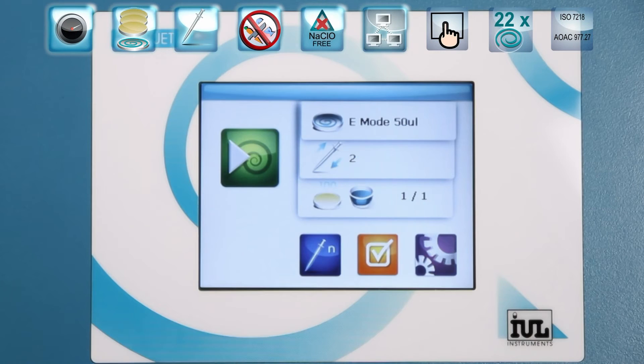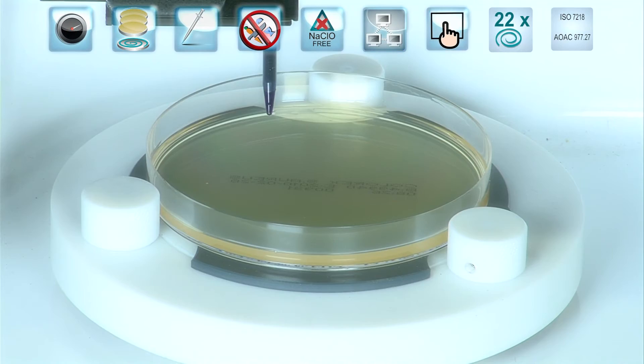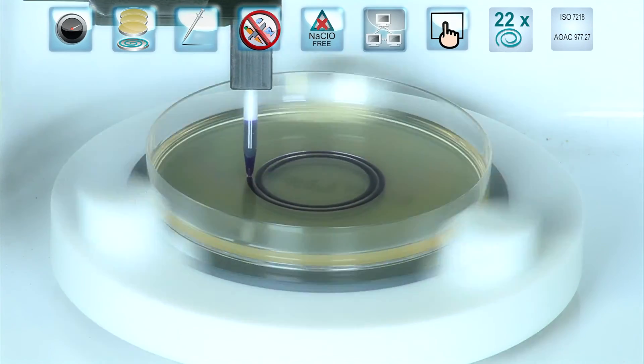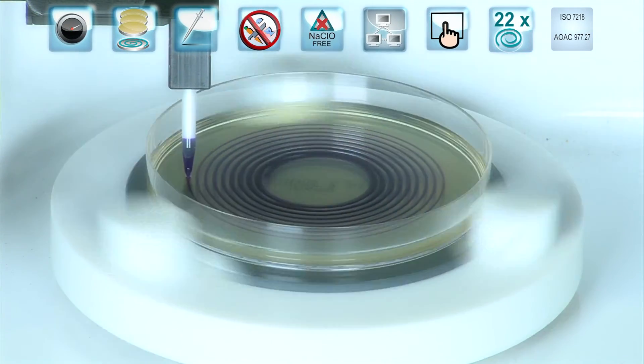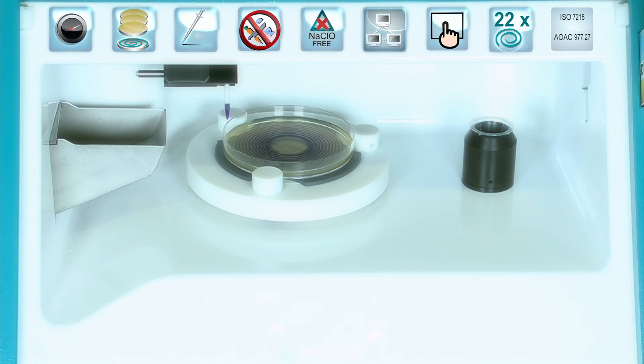EDIJA II's streamlined intuitive software is commanded from a color touch panel. IUL also improved spread times in this device. EDIJA II stands out as the spiral plater with the widest range of spiral distributions, making up to 22 of the most used distributions.